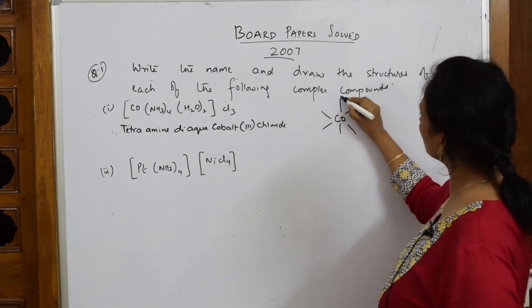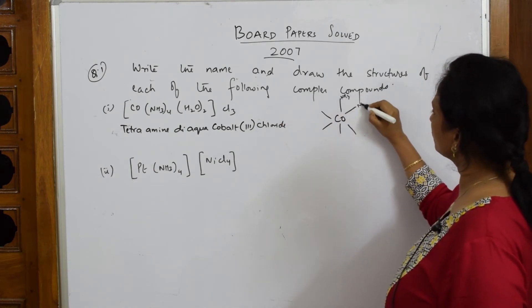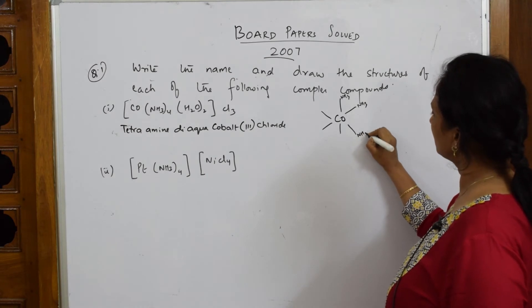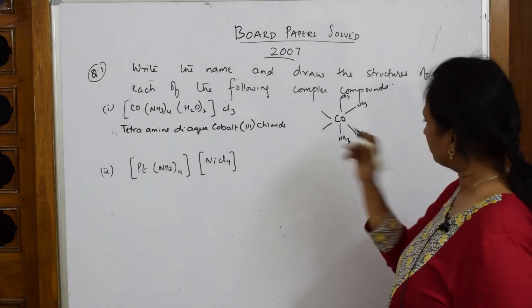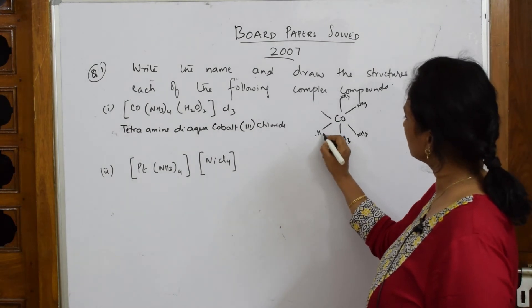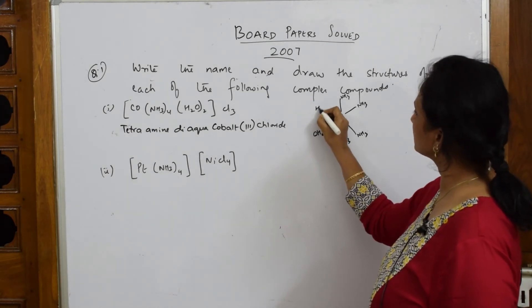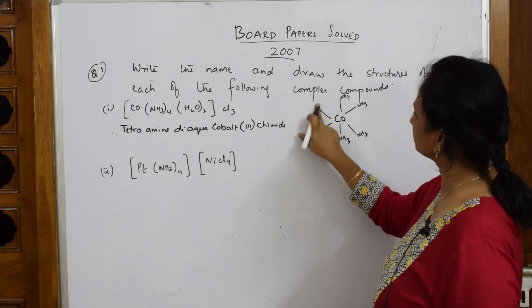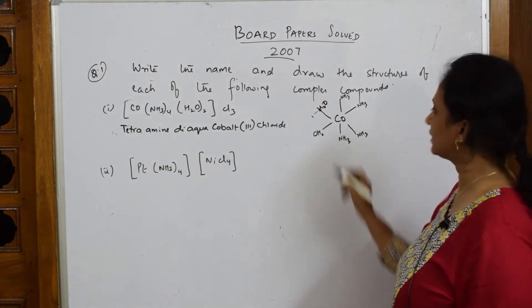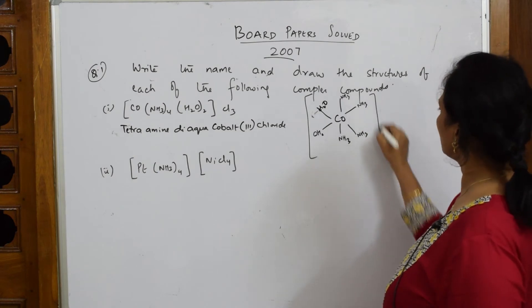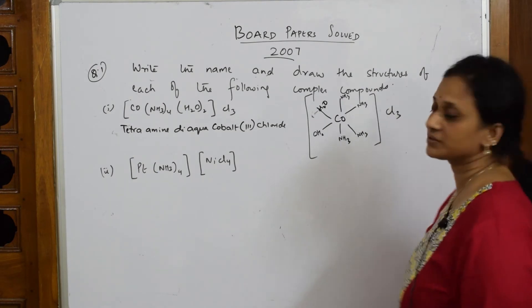Ammonia, how many? Four: 1, 2, 3, 4. Water is the fifth one, sixth one is again water. So this is your octahedral arrangement. On the outer, you have Cl3 arranged. That's it, this is your structure.